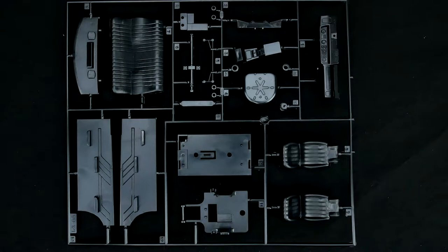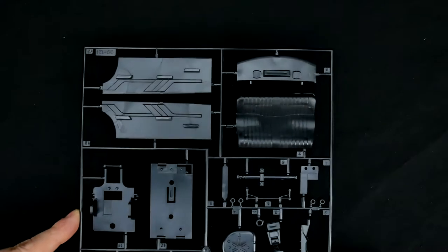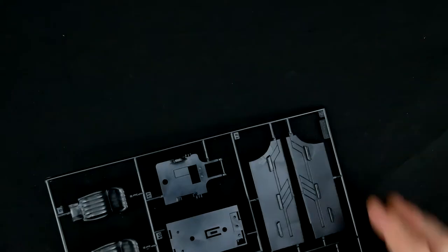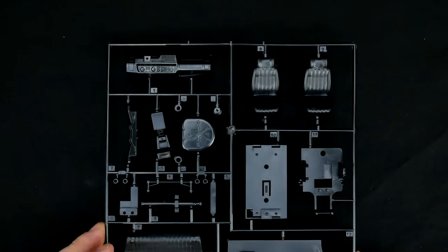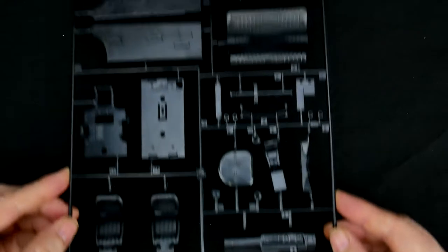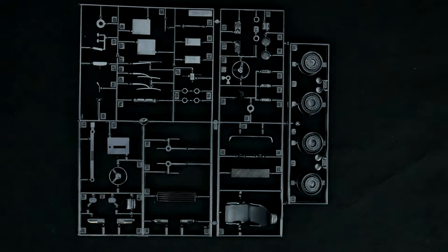Moving on to the first of the parts trees, you can see this has a little bit of everything on it. Moving on to the next parts tree which has a little bit of everything as well.